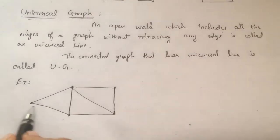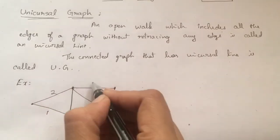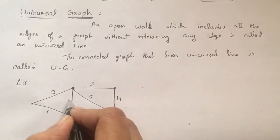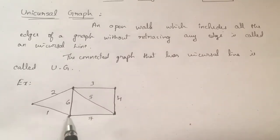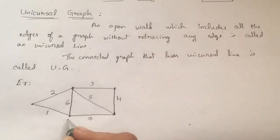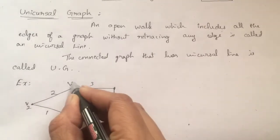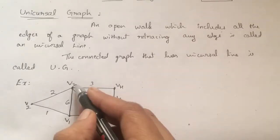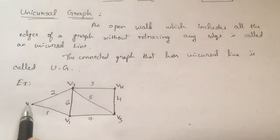Here I can find an open walk which includes all the edges of graph G. If I start from vertex V1, then go to V2, V3, V4, V5, V3, V1, and then V5. I have started from V1 and I am traversing like this.